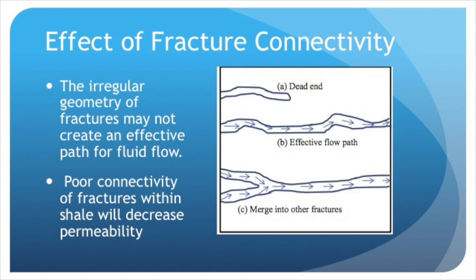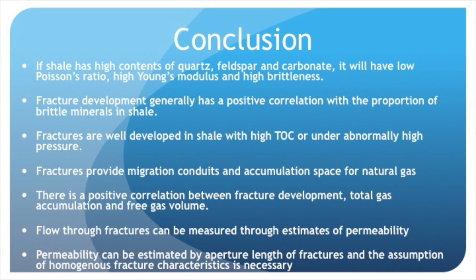In gas shale, some fractures are not effective paths for conducting fluid flow. Fractures may lead to a dead end or may also merge into other fractures. These connectivity issues can have a great effect on the permeability of gas shales. If shale has high contents of quartz, feldspar, and carbonate, it will have a low Poisson's ratio, high Young's modulus, and high brittleness. Fracture development generally has a positive correlation with the proportion of brittle minerals in shale. Fractures are well developed in shale with high total organic content or under abnormally high pressure. Fractures provide migration conduits and accumulation space for natural gas, with a positive correlation between fracture development, total gas accumulation, and free gas volume. Flow through fractures can be measured through estimates of permeability, which can be estimated by aperture and length of fractures, assuming homogenous fracture characteristics.